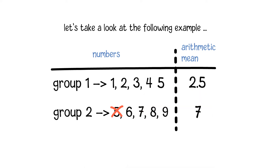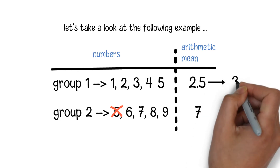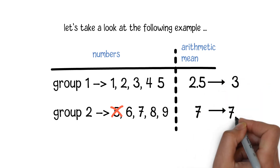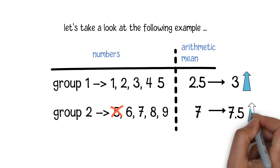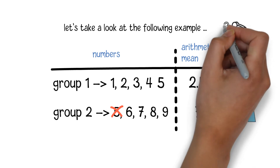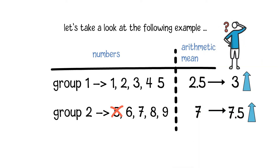Now let's move number five from the second group to the first group. What will happen to the arithmetic mean of the two groups? You can see the arithmetic mean values in both groups are increased to three and 7.5 respectively. Intuitively we may think that if we move some values from one group to another, the arithmetic mean of one group should go up and the other should go down.